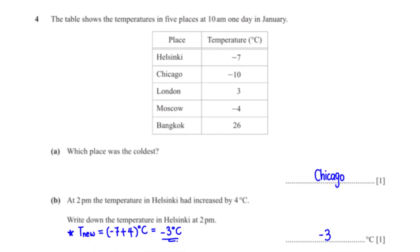The table shows the temperatures in 5 places at 10 a.m. one day in January. Which place was the coldest? The coldest place is the one with the lowest temperature. By looking at the temperature values, the lowest temperature is negative 10, and the place with this temperature is Chicago.